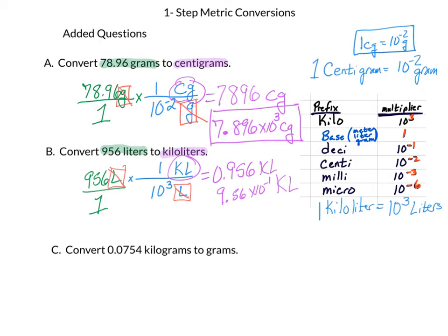Go ahead and work on part C and put your video on pause. Okay, let's start with what we know. We're going to have 0.0754 kilograms, and what we're looking for is grams. We'll write down the 0.0754 kilograms over 1 to make it into a fraction. We'll look at our ratio — the ratio is the same one as before: 1 kilogram is equal to 10 to the third grams.